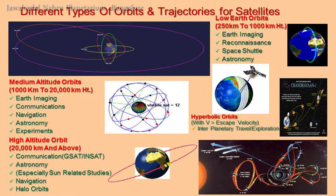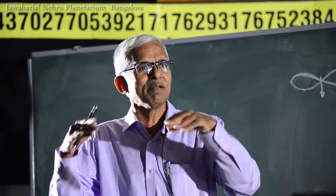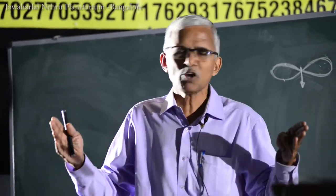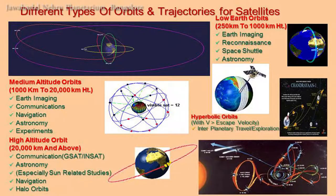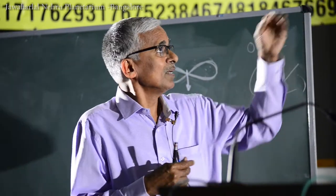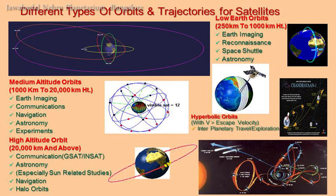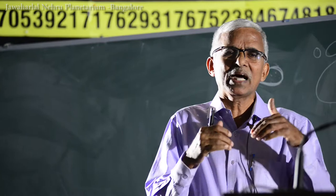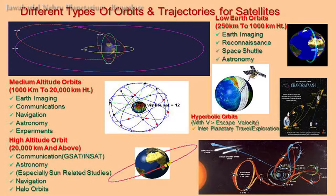Around 20,000 kilometers and above are used for navigation, communication, astronomy, and there are also halo orbits. Very near-Earth orbits are used for strategic applications and high-resolution imagery — the closer to Earth, the higher the resolution. There are also hyperbolic orbits, which are not elliptical but shaped like a part of a hyperbola, used for interplanetary trajectories.